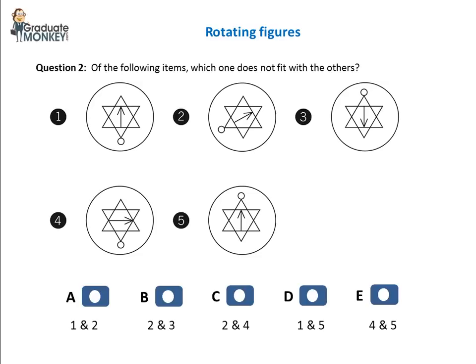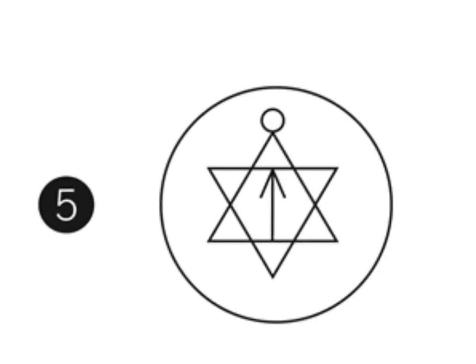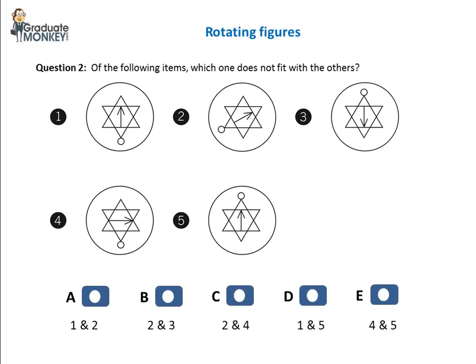On the other hand, figures 4 and 5 cannot be the same as figure 1 because in figure 4 the arrow is placed parallel to the circle, whereas in figure 5 the arrow is pointing at the circle, not away from it. So the correct answer is E, figures 4 and 5.